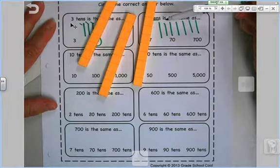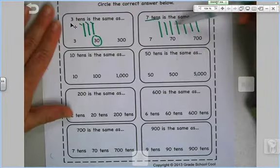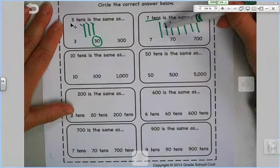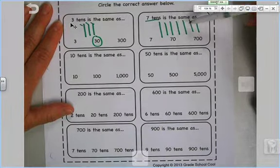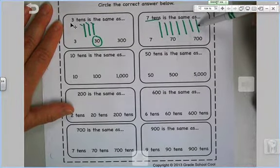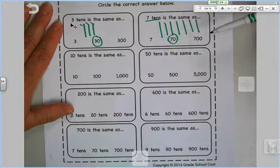10, 20, 30. Well, this one says seven. So 10, 20, 30, 40, 50, 60, 70.